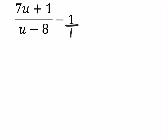Now we need common denominators before we add or subtract. So my denominator over here is u minus 8. If I have a common denominator of u minus 8, then I can combine our numerators. So what I'm going to do is multiply 1 by u minus 8.